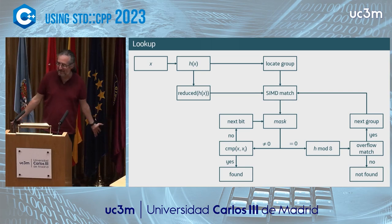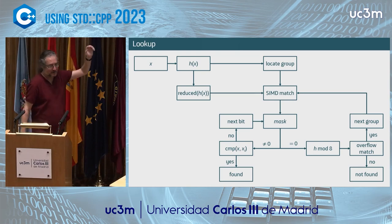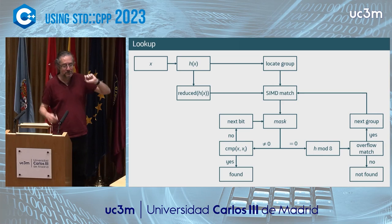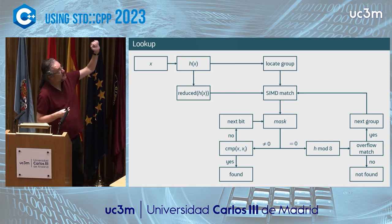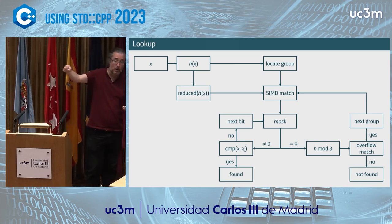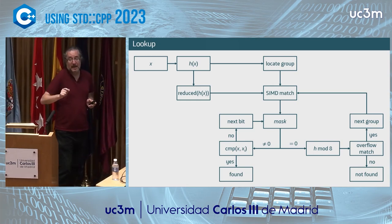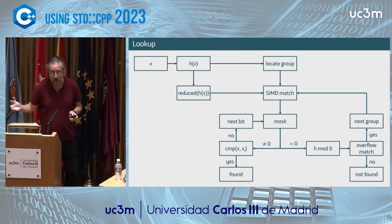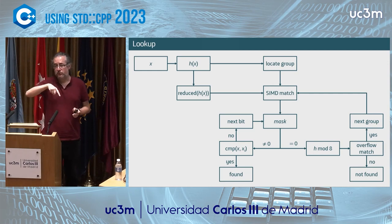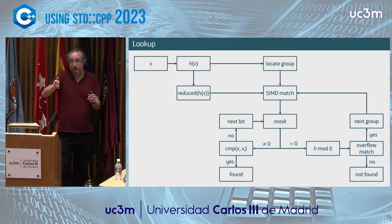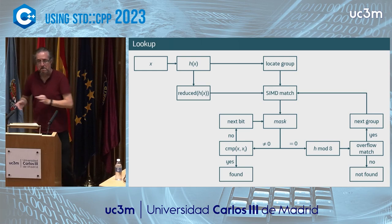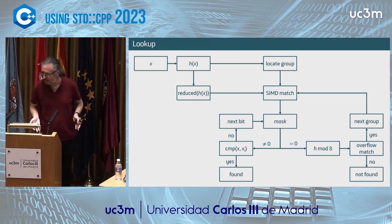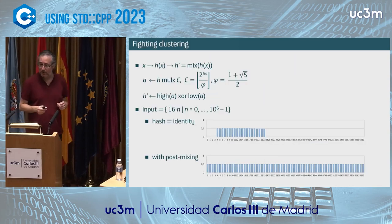Here is the general lookup algorithm. I get element X, calculate the hash value, locate the group, do the SIMD match on 15 elements using the reduced hash, and obtain a mask. I iterate over bits set to one and compare the actual elements. If I find it, I'm done. Otherwise I go to the overflow byte, determine whether the probe sequence has to end. If there's no overflow, the element is not there. Otherwise I continue to the next group, which is probed quadratically at the group level — 15 elements at a time. Insertion is basically the same thing.